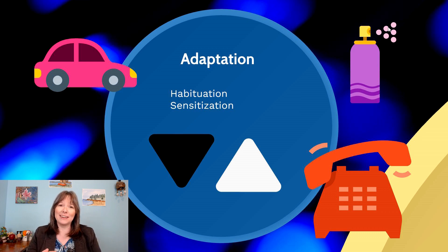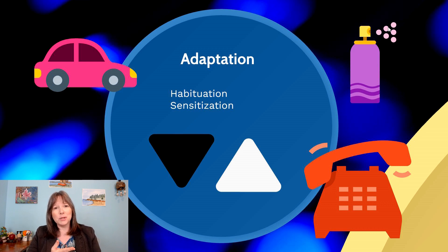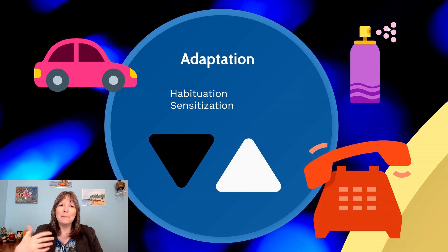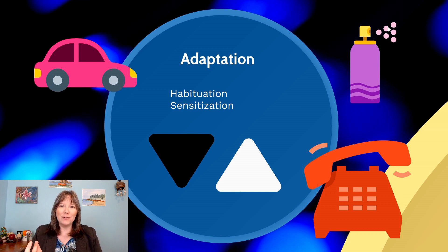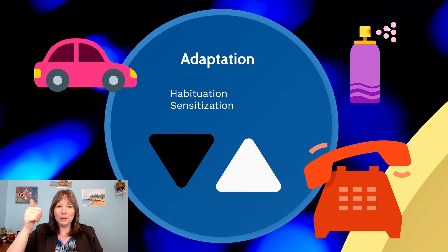Then we have sensitization — the idea that you become more aware of things over time. This often happens because your brain has identified something as informative, dangerous, alarming, or very interesting. For example, when you change your ringtone, you may not recognize it the first couple of times, but then you become hyper-aware of the notifications with the new sound. In everyday life we may constantly be moving between sensitization and habituation to many different things at once.